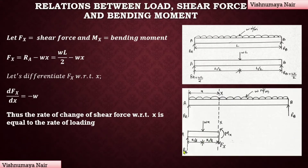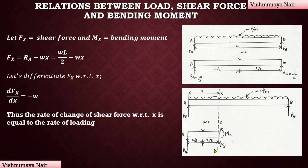On the left portion of the section, we have reaction force RA acting upward and a point load WX acting downward. Any force acting upward on the left portion is considered positive, and any force acting downward is considered negative. Shear force at a section is defined as the algebraic sum of the forces acting on either portion. Since we are considering the left portion, Fx equals plus RA minus WX.